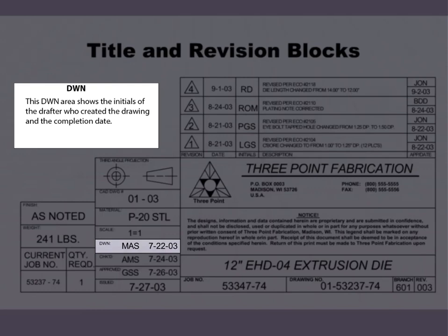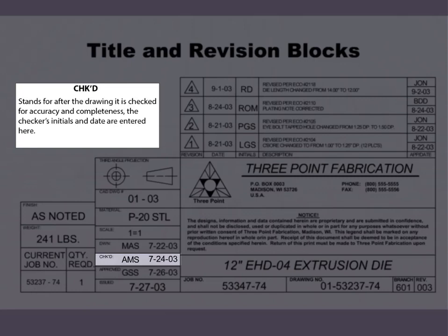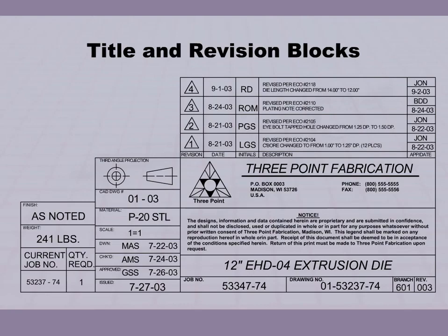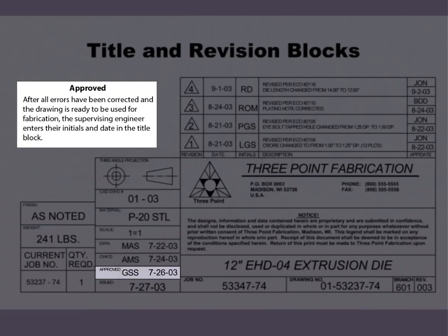The DWN area shows the initials of the drafter who created the drawing and the completion date. Checked stands for after the drawing it is checked for accuracy and completeness — initials and date are entered here. After all errors have been corrected and the drawing is ready to be used for fabrication, the supervising engineer enters their initials and date in the title block.